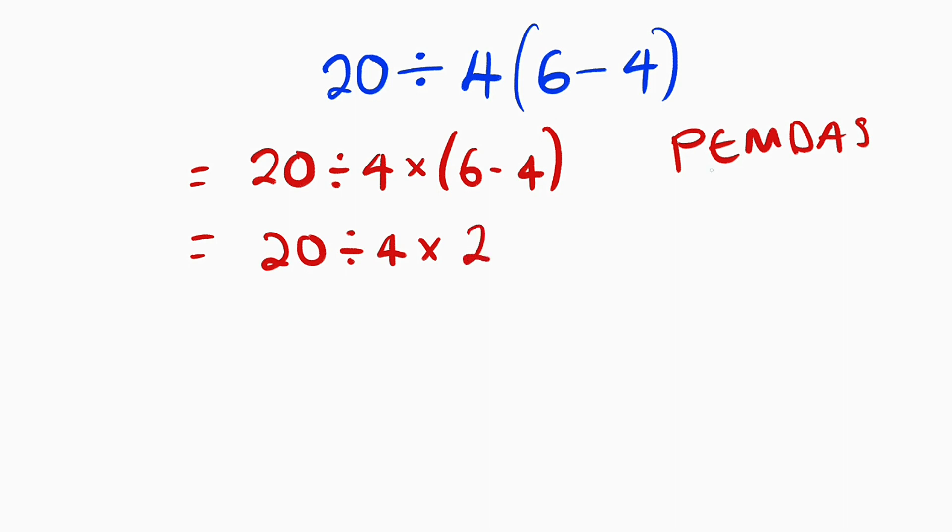Then we move to the next one. After parentheses is exponent. Exponent is absent here because we do not have any number to any power. Remember that multiplication and division are carried out simultaneously, starting with the one that comes first. If you look at this statement here, division comes before multiplication.